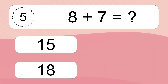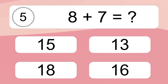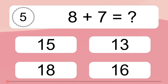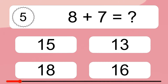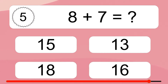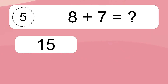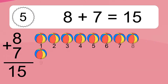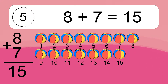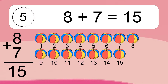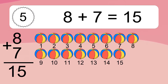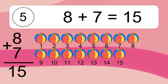8 plus 7 equals what? 8 plus 7 equals 15. Let's count it. 1, 2, 3, 4, 5, 6, 7, 8, 9, 10, 11, 12, 13, 14, 15.